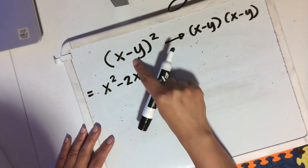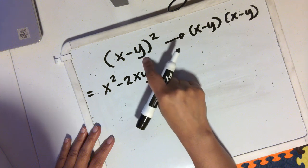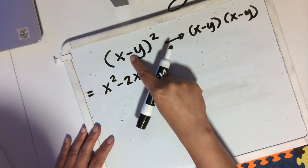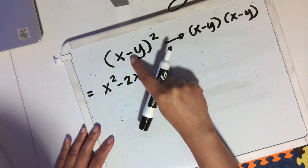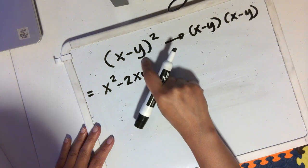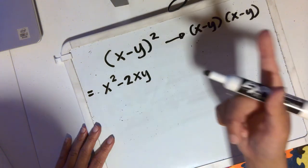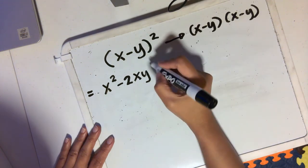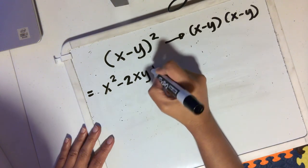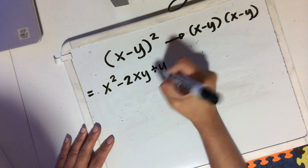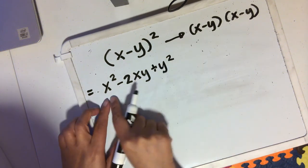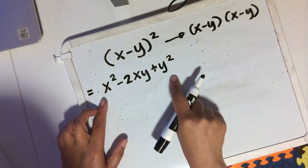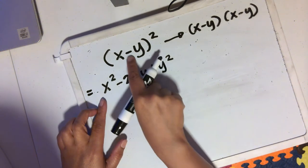And then you square your last term. You take the minus sign as part of the y, so it becomes negative y, and then you square that. That's going to be positive y squared. So this becomes the formula if it's a minus.